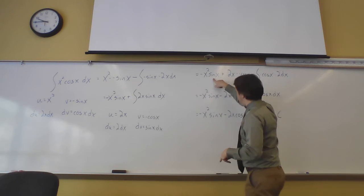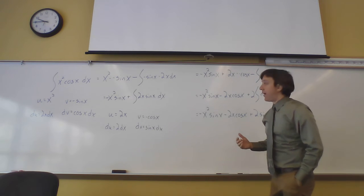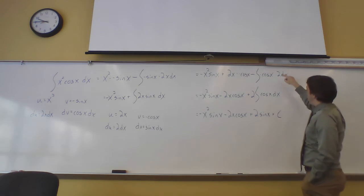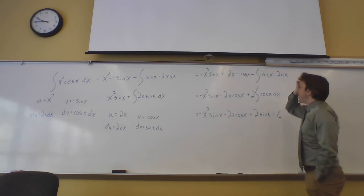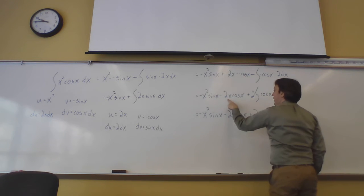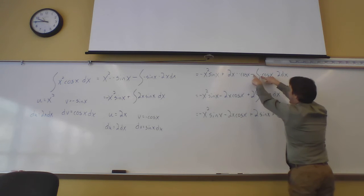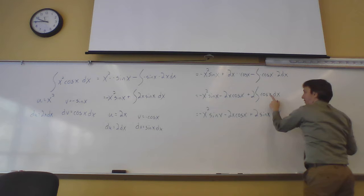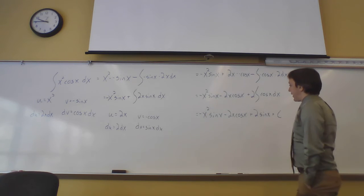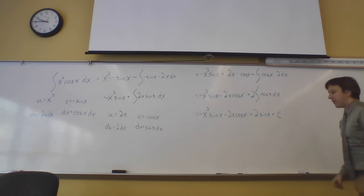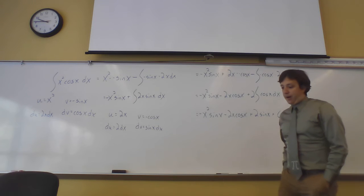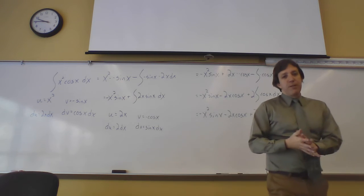The −x²·sin(x) is just along for the ride now. Applying the formula: u·v = 2x·(−cos x), minus the integral of (−cos x)·2 dx. The two negatives make a plus, giving −x²·sin(x) − 2x·cos(x) + 2 times the anti-derivative of cos(x) dx. The anti-derivative of cosine is sine, so the final answer is −x²·sin(x) − 2x·cos(x) + 2·sin(x) + C. It's a mess, but there it is.